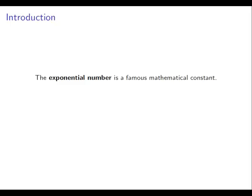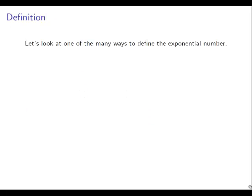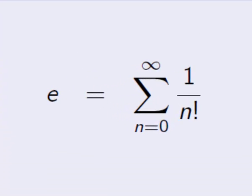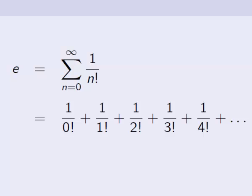The exponential number is a famous mathematical constant. We denote this number by the letter E. Like pi, the number E pops up in various places and is important to many areas of mathematics. You might remember the number pi as being the ratio of the circumference of a circle to its diameter. Let's look at one of the many ways that we can define the exponential number E. E is equal to the summation from n equals 0 up to infinity of 1 over n factorial — that means E equals 1 over 0 factorial plus 1 over 1 factorial plus 1 over 2 factorial, and so on forever.